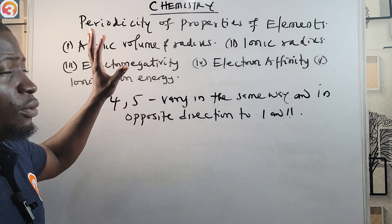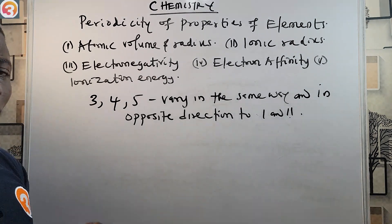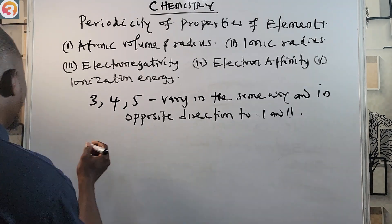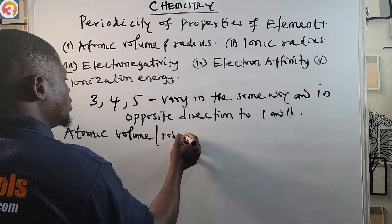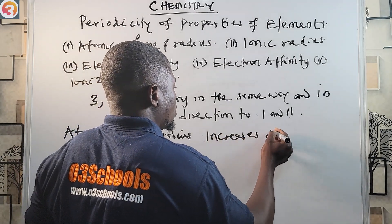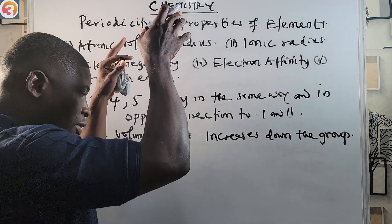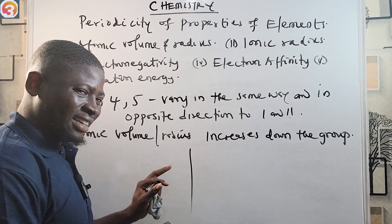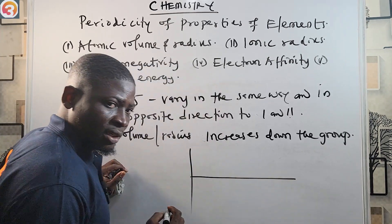For atomic volume and radius: down the group, atomic volume and radius increases. So if you are going down the group — vertically — it increases. But if you are going across the period — horizontally — atomic volume and radius decreases.